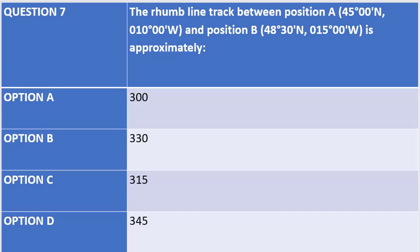The question states: the rhumb line track between position A, which is 45 degrees north, 10 degrees west, and position B, which is 48 degrees 30 minutes north and 15 degrees west, is approximately. Options are: option A, 300 degrees; option B, 330 degrees; option C, 315 degrees; and option D, 345 degrees.